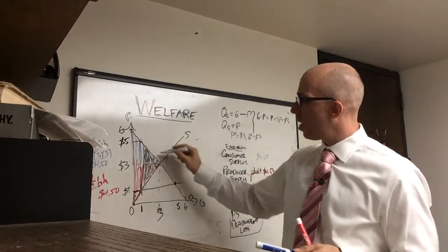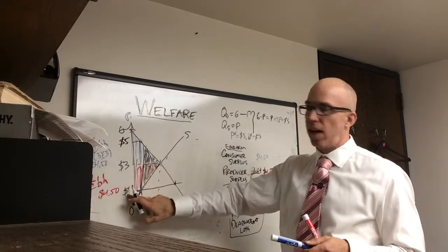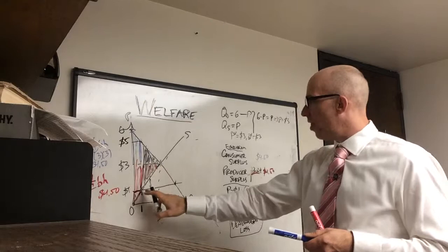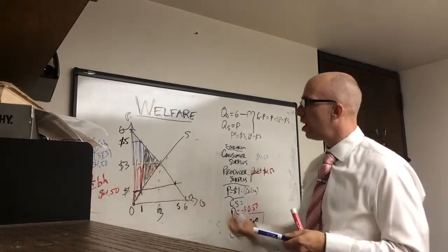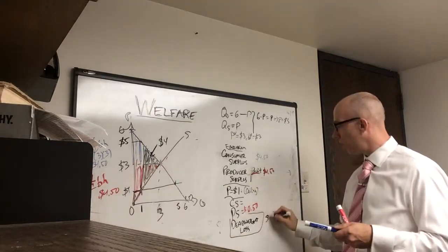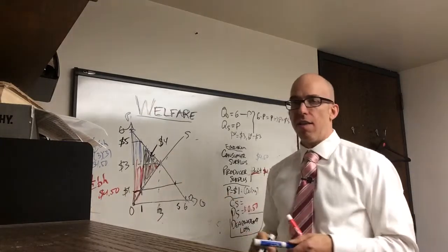Now if you look here, you can say, one half base times height, 5 minus 1, that's the height, so 4. And then this from here to here is 2, this is going to be $4 worth of deadweight loss. So this has gone to no one. Now the only thing that's left is the consumer surplus.